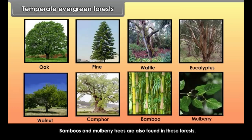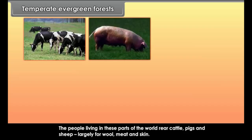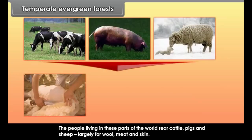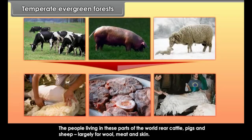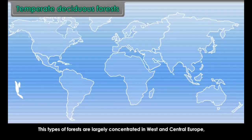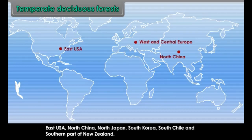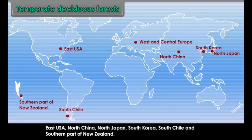Bamboos and mulberry trees are also found in these forests. The people living in these parts rear cattle, pigs and sheep largely for wool, meat and skin. Temperate Deciduous Forests are largely concentrated in West and Central Europe, East USA, North China, North Japan, South Korea, South Chile and the southern part of New Zealand.